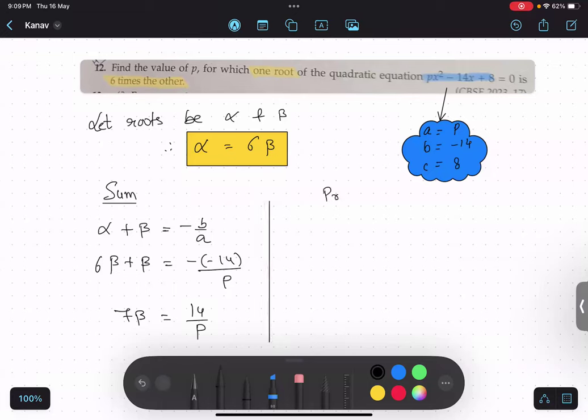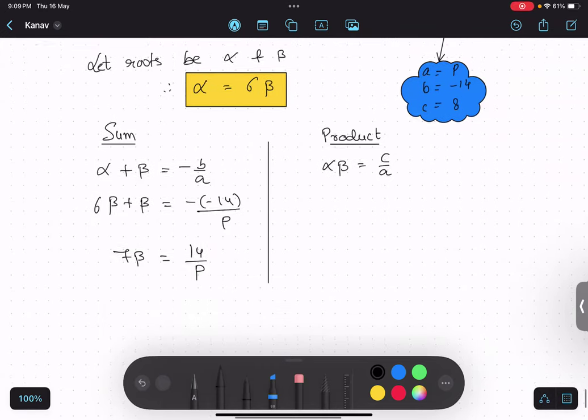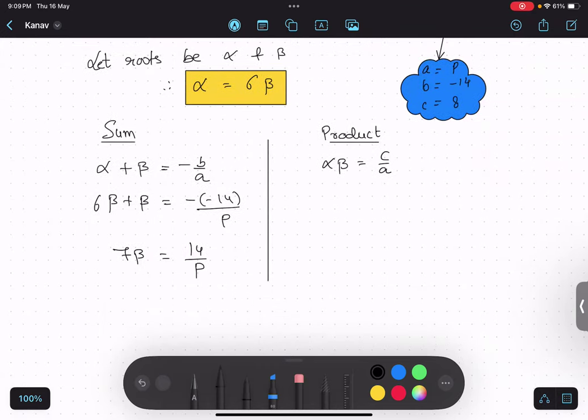Now I will be focusing on product. Alpha into beta. Alpha into beta is what? C upon a. First step is formula. And now I will substitute.